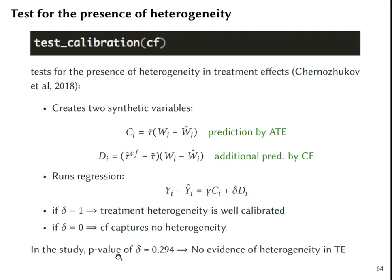In this study they found that the p-value of delta was larger than 5%, which means that there is no evidence of heterogeneity in treatment effects. So it is likely that this intervention was actually affecting every single student on average in the same way.